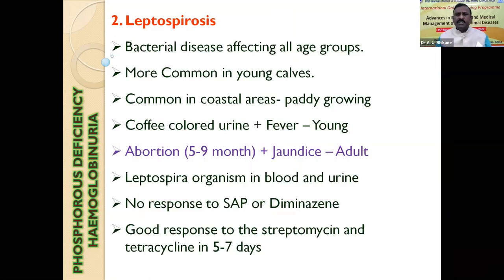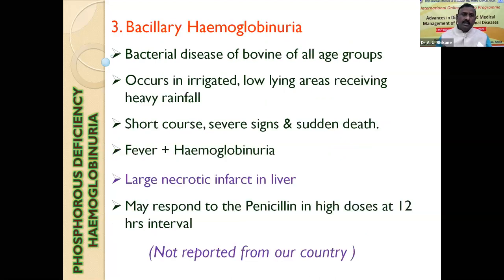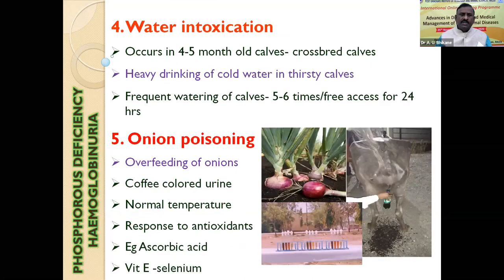Leptospirosis has been discussed — in cows with jaundice, it is commonly seen in paddy-growing areas where waterlogging is present. These cases do not respond to imidocarb, phosphate, or diminazene. Leptospirosis is prevalent in human population as well as in different animal populations. Bacillary hemoglobinuria is very rare — I have not come across any case. It is a disease of bovines, having a very short course and sudden death, with characteristic necrotic lesions at postmortem.